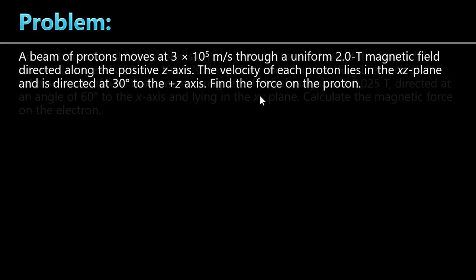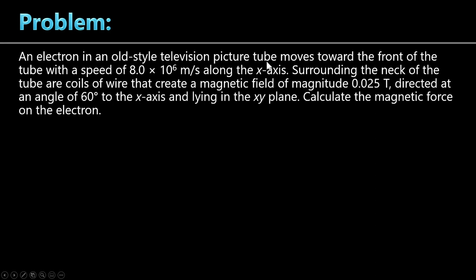Now let us solve another problem. Number two. An electron in an old-style television picture tube — the old TV with a bulging back. Inside it there are coils of wire. The electrons move towards the front of the tube with a speed of 8 times 10 to the 6 meters per second along the X axis. Surrounding the neck of the tube are coils of wire creating a magnetic field of 0.025 Tesla. This magnetic field will direct the electrons towards the screen, directed at an angle of 60 degrees to the X axis, lying in the XY plane. Calculate the magnetic force on the electron.